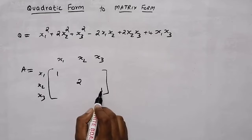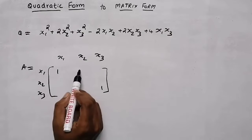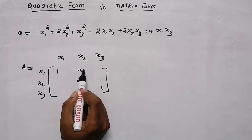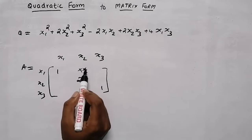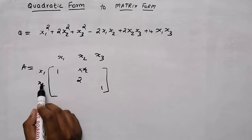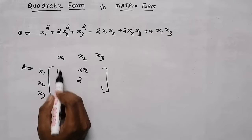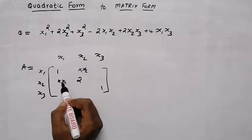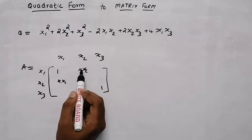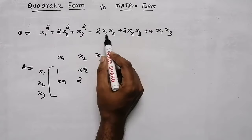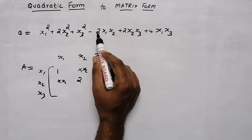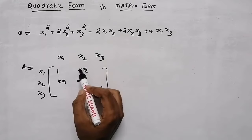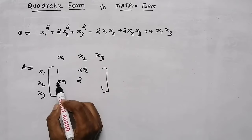Now we have written all the diagonal elements. This element will be the product of x1 and x2. Here also, we can see this element — it is a product of x2 and x1, same as x1 and x2. So both elements will have the same product. The coefficient of x1·x2 is minus 2, so we need to give this minus 2 as half here and half here — that is, minus 1 here and minus 1 here.